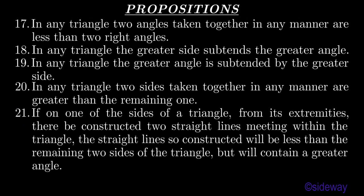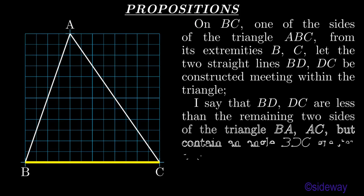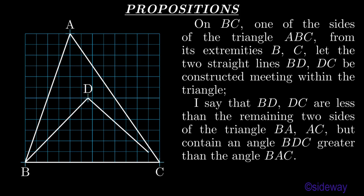Proposition 21. If on one of the sides of a triangle, from its extremities, there be constructed two straight lines meeting within the triangle, the straight lines so constructed will be less than the remaining two sides of the triangle, but will contain a greater angle. On BC, one of the sides of the triangle ABC, from its extremities BC, let the two straight lines BD, DC be constructed meeting within the triangle. I say that BD, DC are less than the remaining two sides of the triangle BA, AC, but contain an angle BDC greater than the angle BAC.